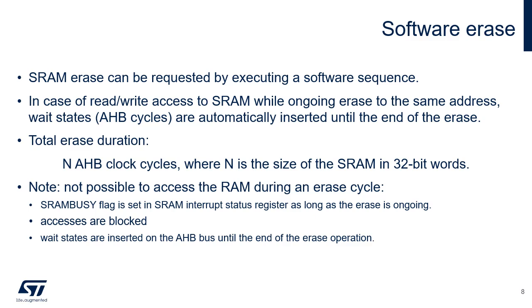SRAM erase can be requested by executing a software sequence based on keys that have to be written to key registers. The SRAM busy flag is set in the related SRAM interrupt status register as long as the erase is ongoing. The total duration of each SRAM erase is equal to N AHB clock cycles, where N is the size of the SRAM in 32-bit word units. If the SRAM is read or written while an erase is ongoing, wait states are inserted on the AHB bus until the end of the erase operation.